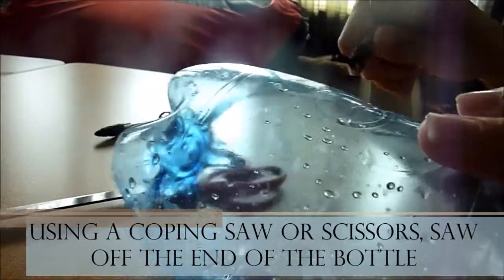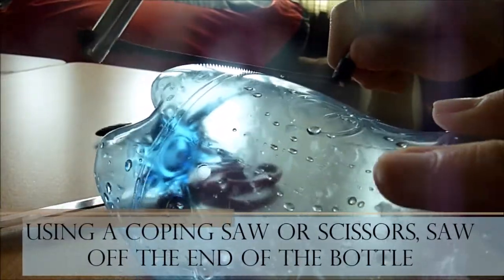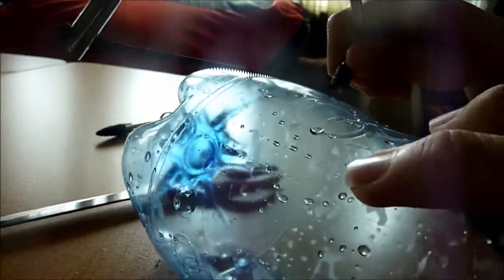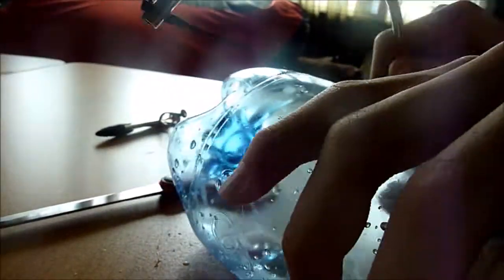Next, either use a coping saw or really sharp scissors to cut off the edge of the bottle here.